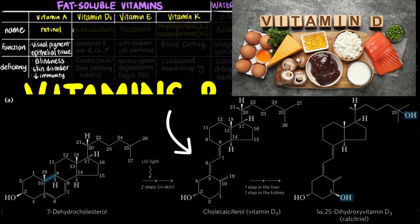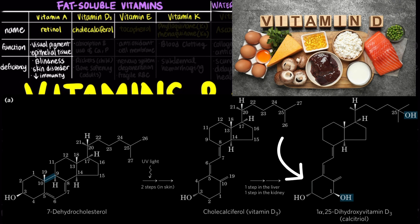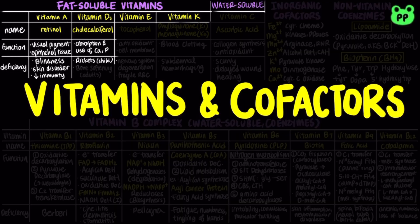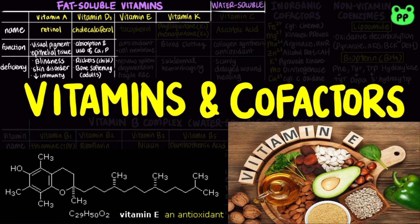Vitamin D3, also known as cholecalciferol, is a precursor to the hormone calcitriol that regulates the absorption and use of calcium and phosphorus. Deficiency of vitamin D3 leads to rickets in children and bone softening in adults.